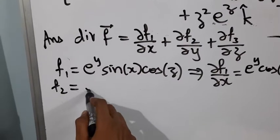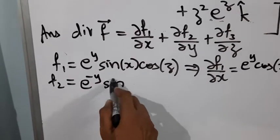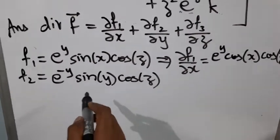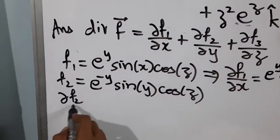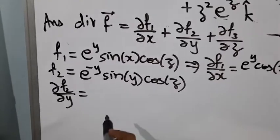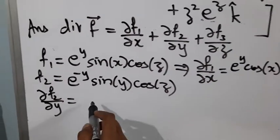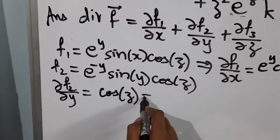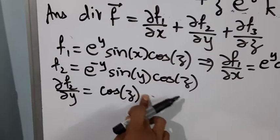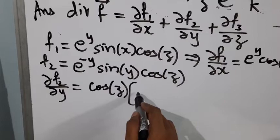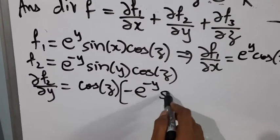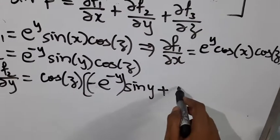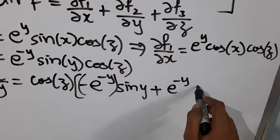f2 is e power minus y sin x cos z. To find dou f2 by dou y, there are two factors with y so we apply the product rule. cos z is a constant here, giving us cos z into minus e power minus y sin y plus e power minus y cos y.